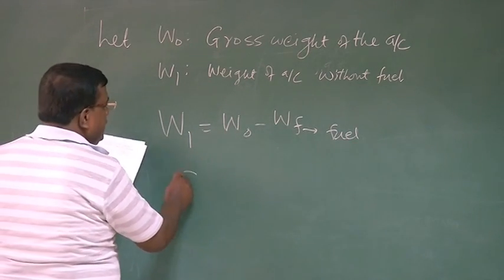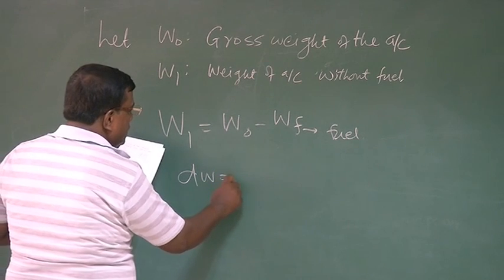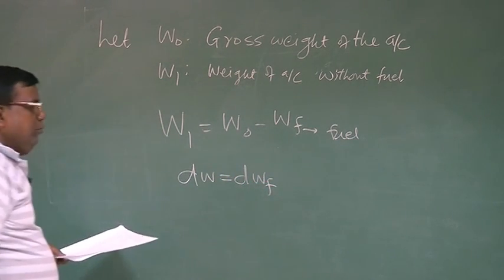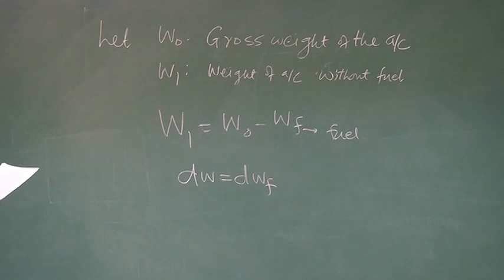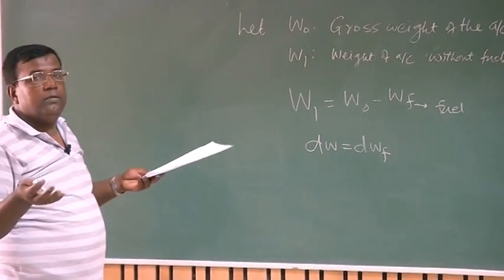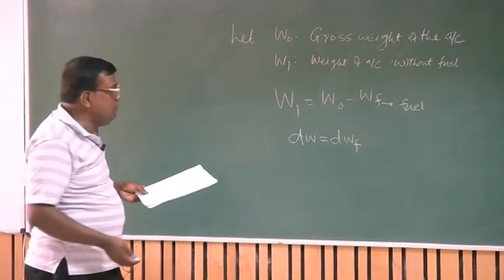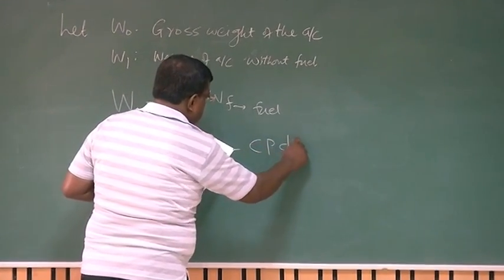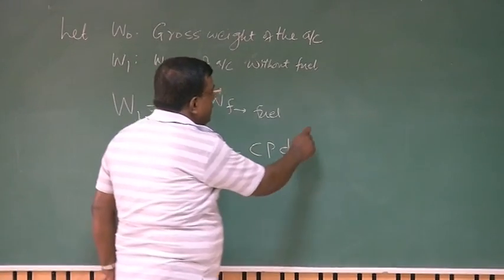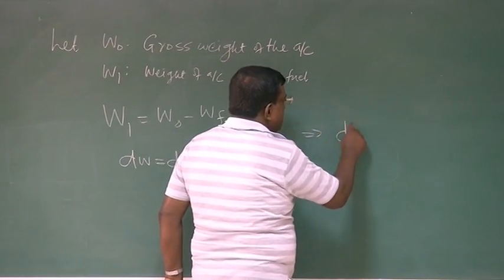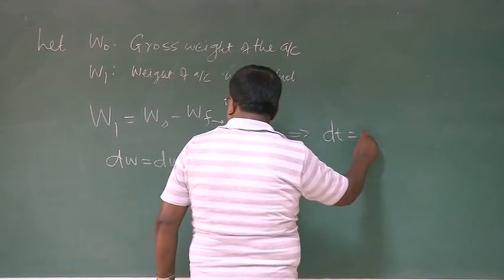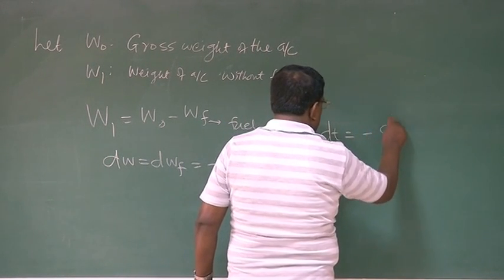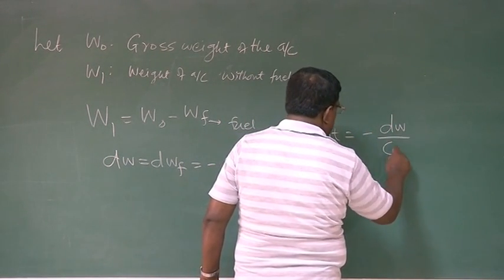From here I can write dW equals dWf, because I am pretty sure that I am not dropping anything out of the aircraft. The change in the weight of the aircraft is because of consumption of fuel. So this is equal to minus Cp dt. From here I can simply write dt equal to minus dW by Cp.